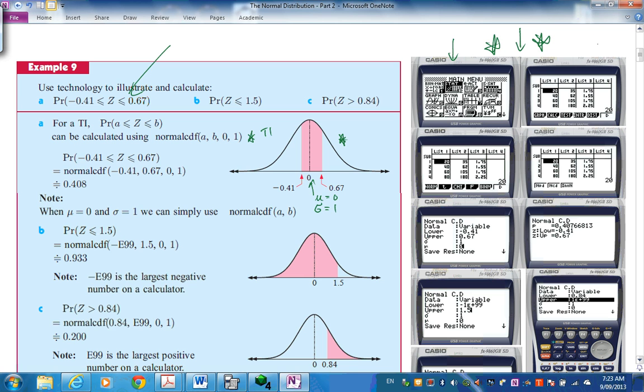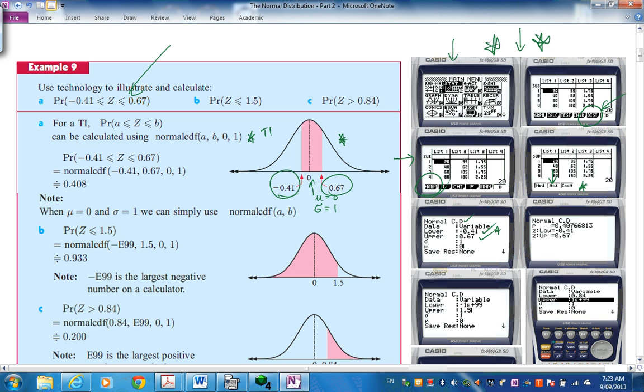So let's have a look. You go to stat mode. If you click execute, can you see down here distribution? You choose that by F5, and then you come into this window here. Normal distribution, push F1, and you get these options. We're going to be using NCD, normal cumulative distribution. Put in the lower value neg 0.41, upper 0.67, and put in the sigma and the mu. If you then hit execute, you end up with that probability.